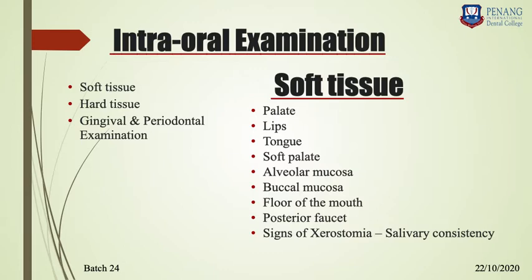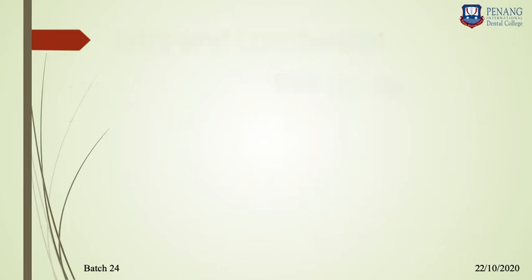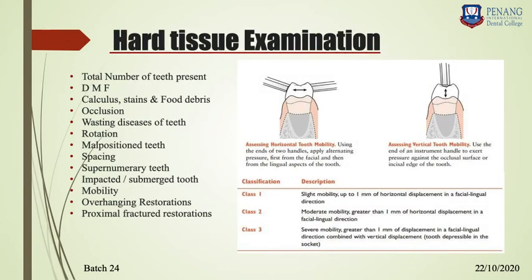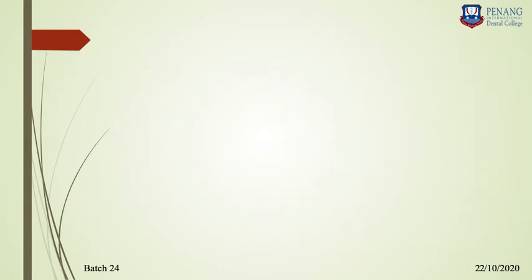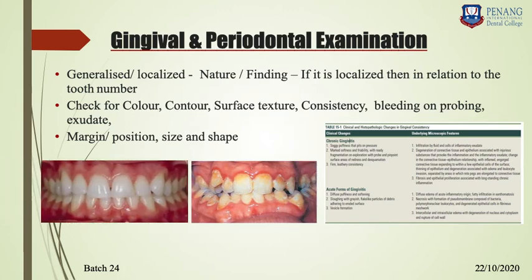In soft tissue examination, you examine the palate, lip, tongue, soft palate, alveolar mucosa, buccal mucosa, floor of the mouth, posterior fauces, and signs of xerostomia. In hard tissue examination, examine the total number of teeth present, decay-missing-filling counts, calculus, stains, food debris, occlusion, wasting diseases, rotated or malpositioned teeth, spacing, crowding, supernumerary, impacted or submerged teeth, tooth mobility, overhanging or fractured restorations.